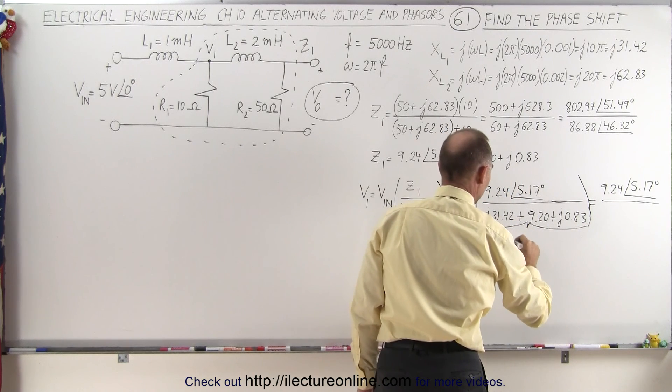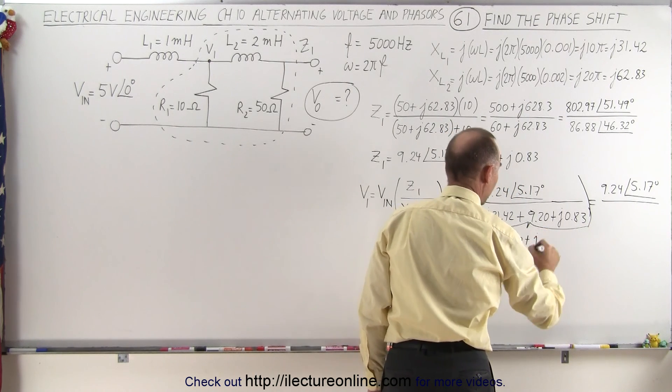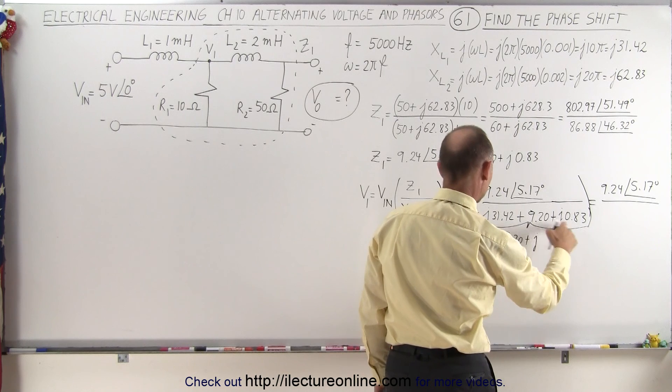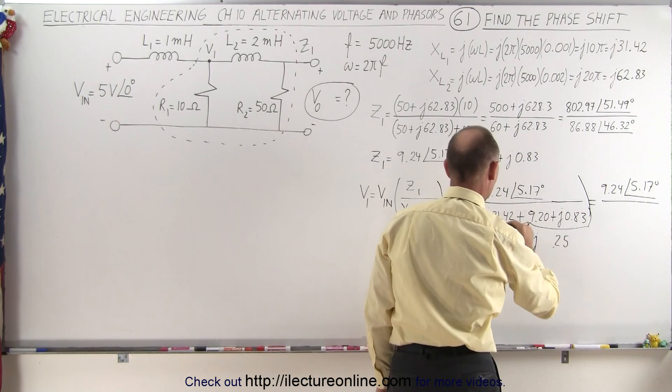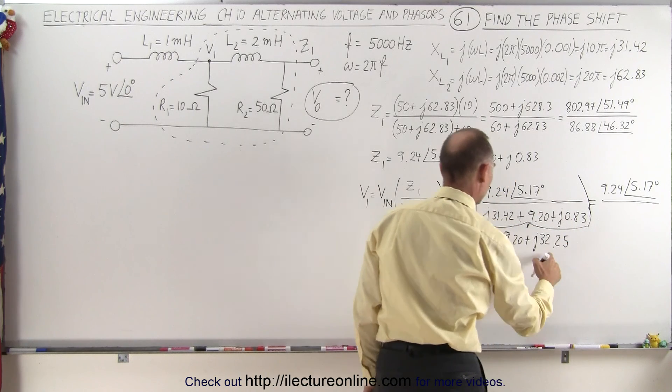This is 9.20 + j, when we add this together that would be 32.25. Let's see if that's correct. Yes, that's correct.